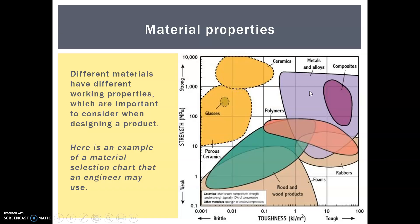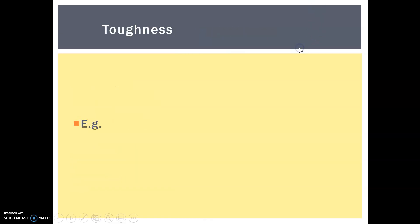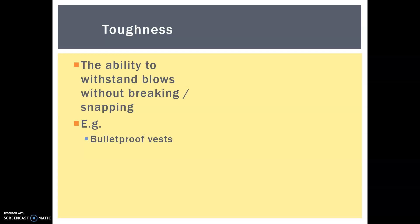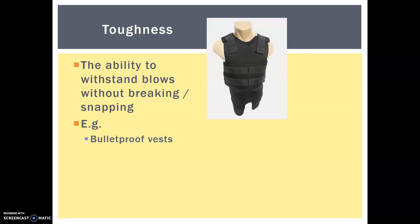So toughness is the ability to withstand blows without breaking or snapping. Bulletproof vests are a great example. They need to be able to withstand the force of a bullet. Hard hats need to be able to withstand forces of debris falling on them, a brick even perhaps. You want them to be able to conform a little bit and bounce back without breaking.